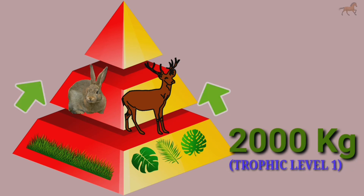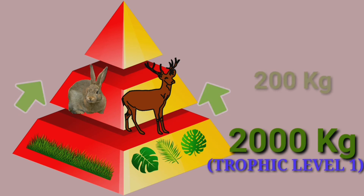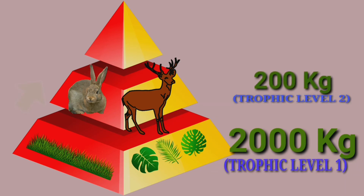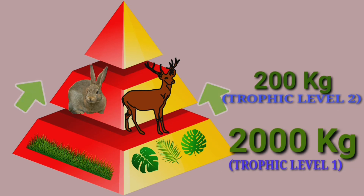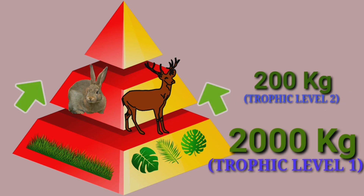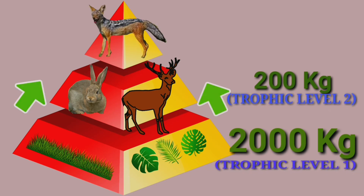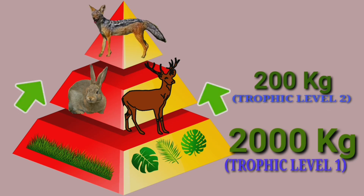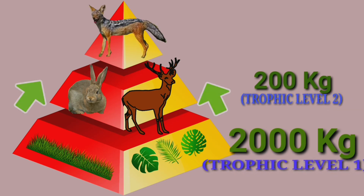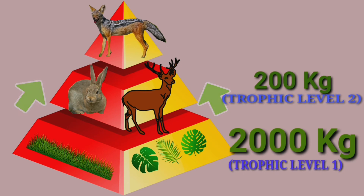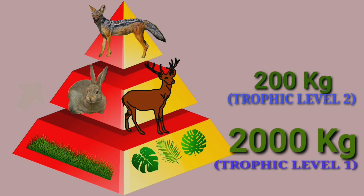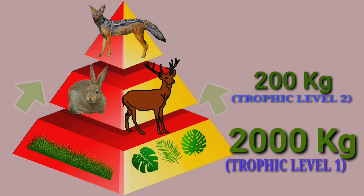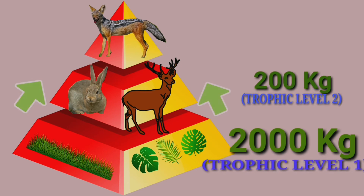By looking at this pyramid of biomass, we can see that almost 2000 kg of producers at trophic level 1 can support 200 kg of primary consumers at trophic level 2.